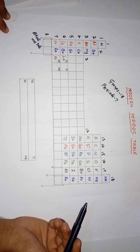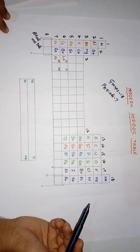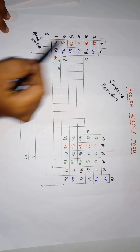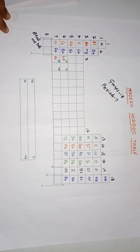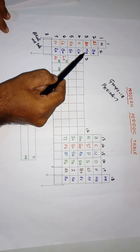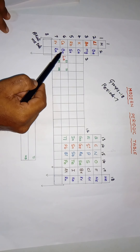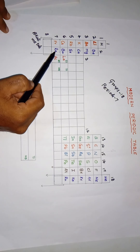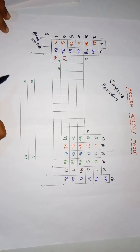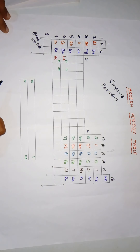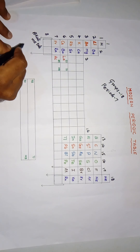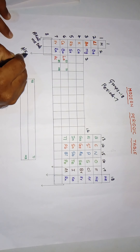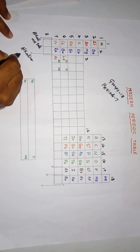The second group elements — beryllium, magnesium, calcium, strontium, barium, and radium — are called group two elements, and they are also called alkaline earth metals.